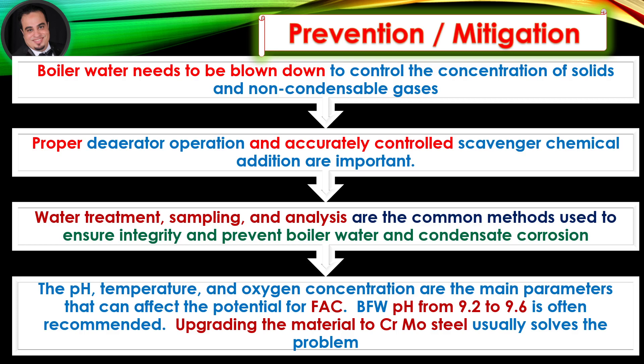Water treatment, sampling, and analysis are the common methods used to ensure integrity and prevent boiler water and condensate corrosion. The pH, temperature, and oxygen concentration are the main parameters that can affect the potential for flow accelerated corrosion. Boiler feed water pH from 9.2 to 9.6 is often recommended. Upgrading the material to chromium molybdenum steel usually solves the problem.